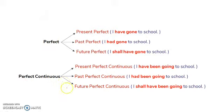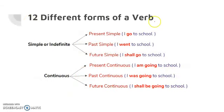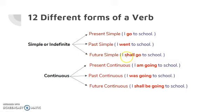All together, there are twelve different tense forms. In simple or indefinite, we can divide it into present simple, past simple, and future simple. In present simple: 'I go to school' — V1 form of the verb. In past simple: 'I went to school' — V2 form of go. In future simple: 'I shall go to school' — the helping verb 'shall' with V1 form, because when it is future tense, we should use the helping verb 'shall' or 'will'.